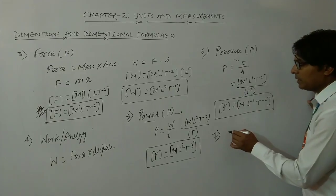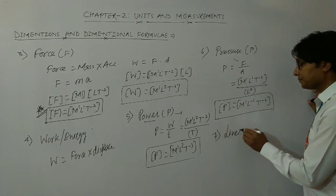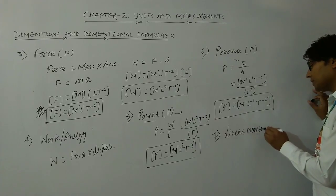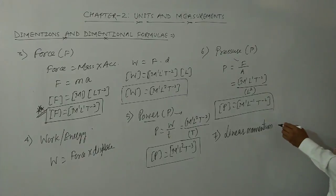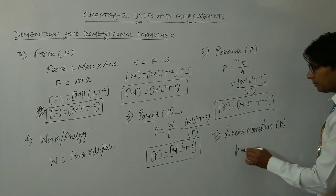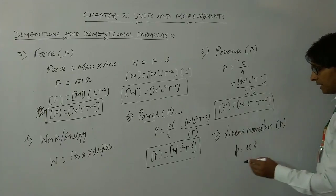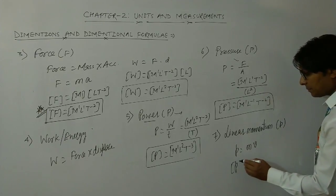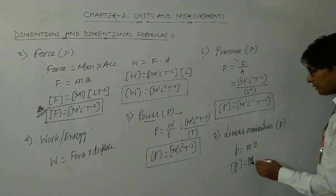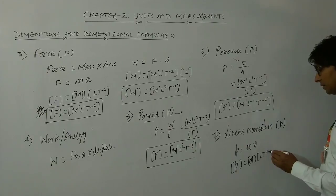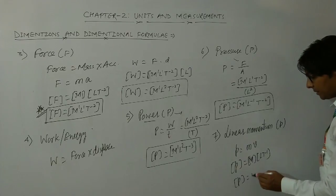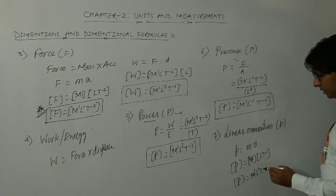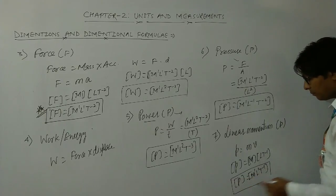One more dimensional formula to write is for linear momentum, denoted by p. Linear momentum equals mass into velocity. The dimensional formula for mass is M and for velocity is L T⁻¹. Therefore, the dimensional formula of linear momentum is M¹ L¹ T⁻¹.